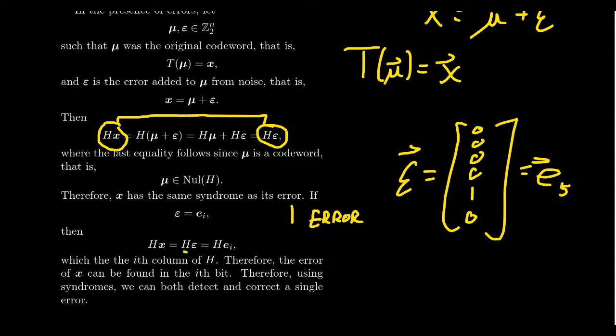H of EI, that's right. Which, remember, would be the ith column of H. So therefore, the syndrome of X, if there was a single error, will just be the ith column of H. So as long as we don't have any repeated columns, then we could actually see exactly where that single error occurred. All right? And so we'll see an example of how to do exactly that in a moment.